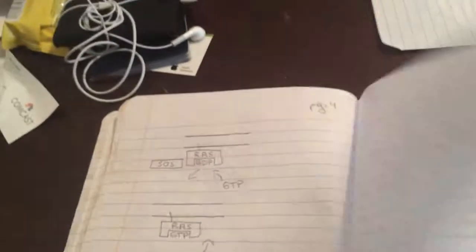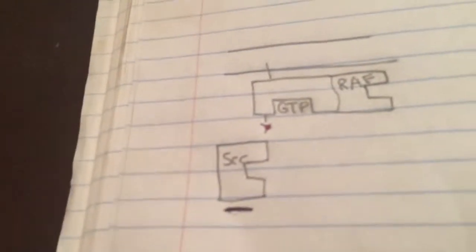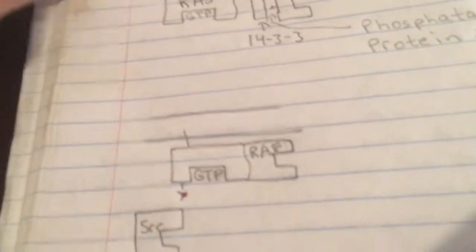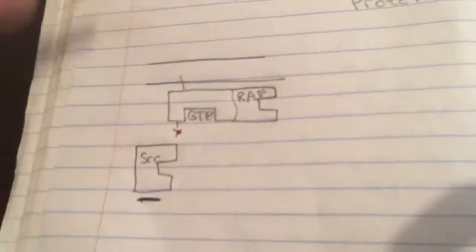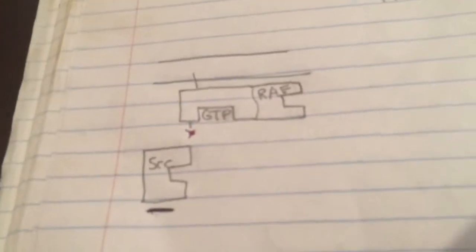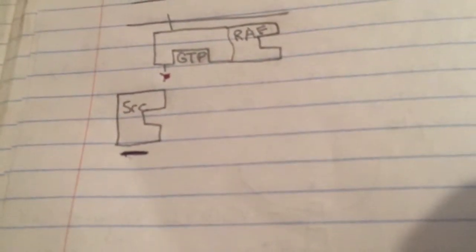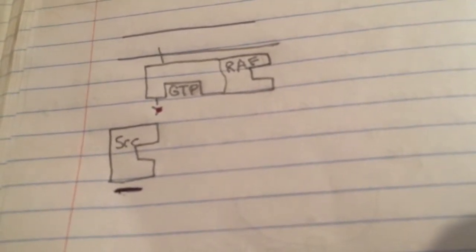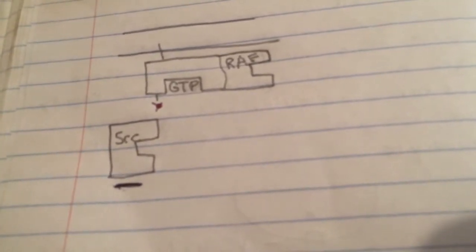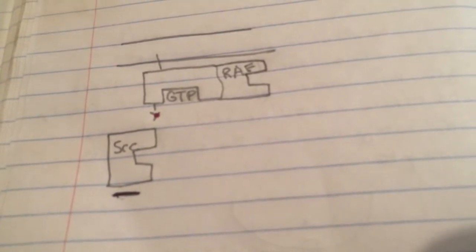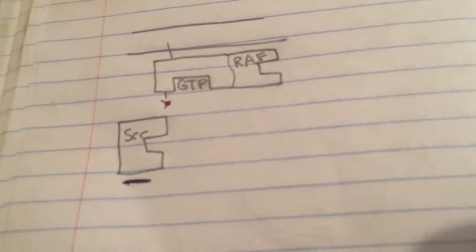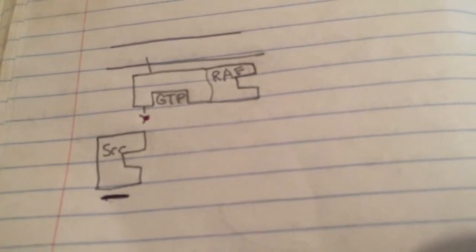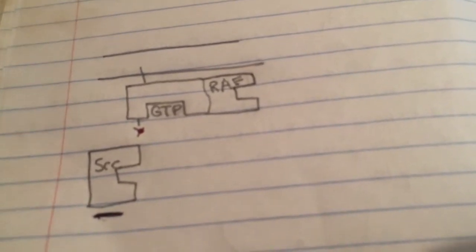But what I really wanted to end with was the SRC non-receptor tyrosine kinase right there. Because all those other homology domains were originally found right there, I believe in the Rous sarcoma virus in the chicken way back when. And that's old school. That's old school. So that's it, Rich CNA. See you later.